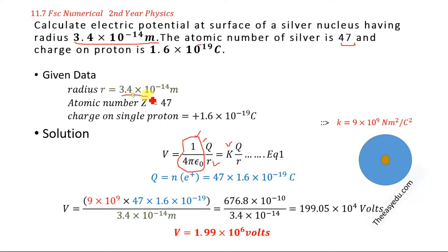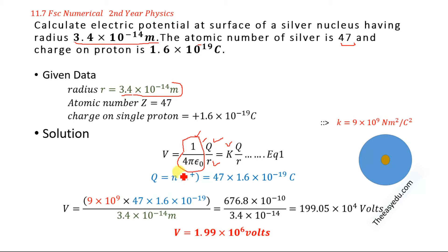The radius of the silver nucleus is 3.4 × 10⁻¹⁴ meters and the atomic number is given, so we will calculate the total charge inside this nucleus. The total charge will be equal to the sum of all the charges on the 47 protons. For calculating Q, the total charge equals the number of protons in the nucleus multiplied by the charge on each proton.